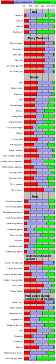Monounsaturated fats are found in animal flesh such as red meat, whole milk products, nuts, and high fat fruits such as olives and avocados. Olive oil is about 75% monounsaturated fat. The high oleic variety sunflower oil contains as much as 85% monounsaturated fat. Canola oil and cashews are both about 58% monounsaturated fat. Tallow is about 50% monounsaturated fat, and lard is about 40% monounsaturated fat.